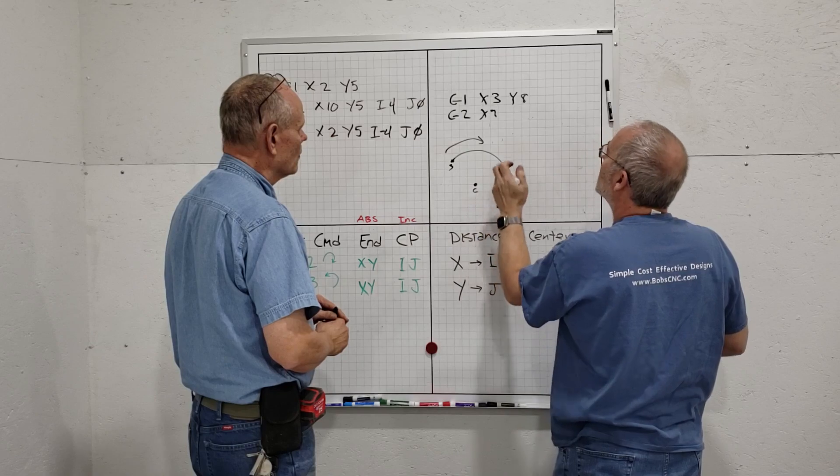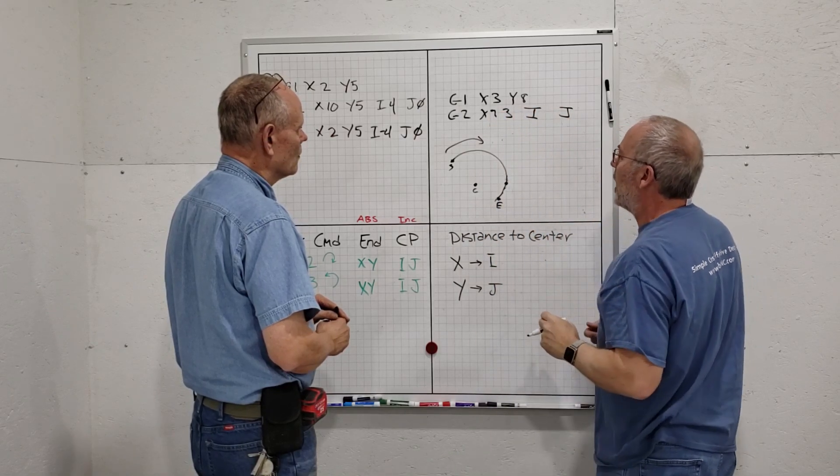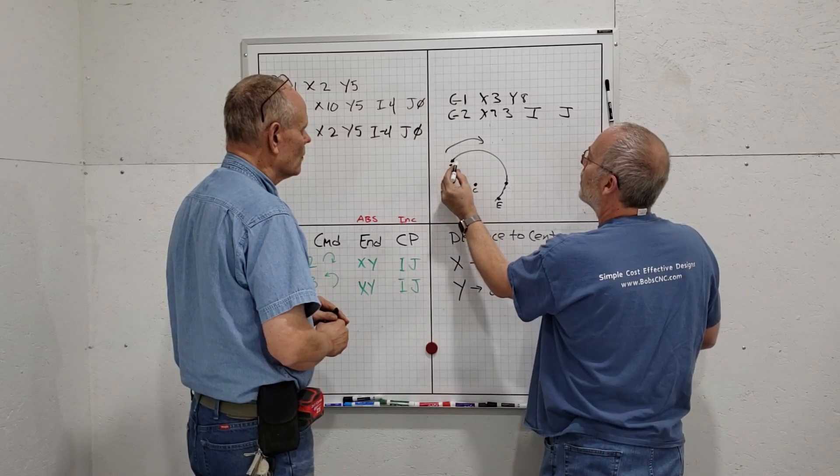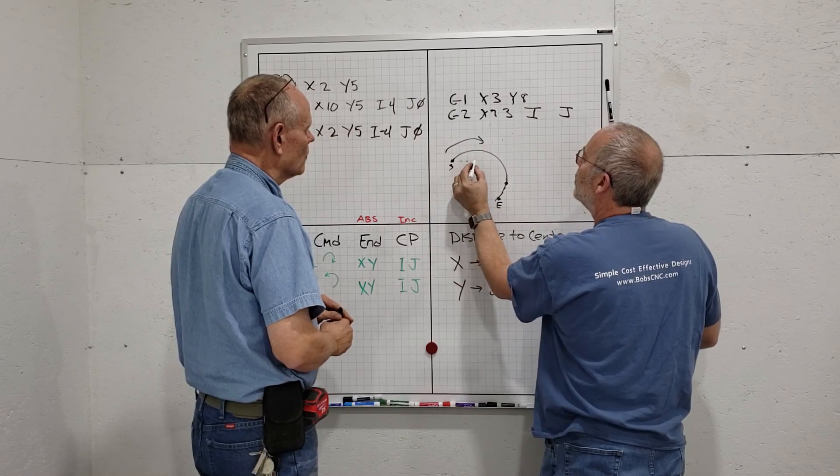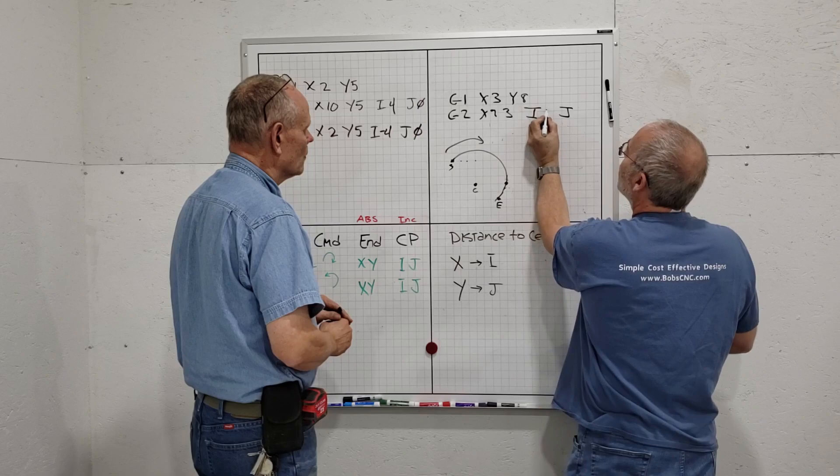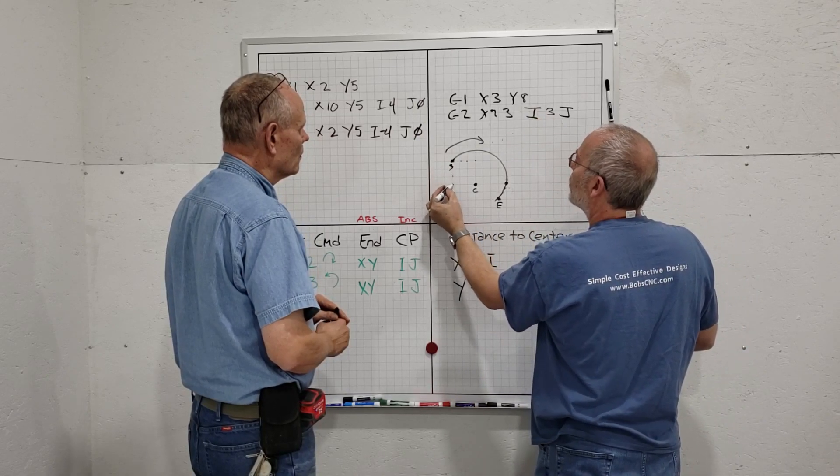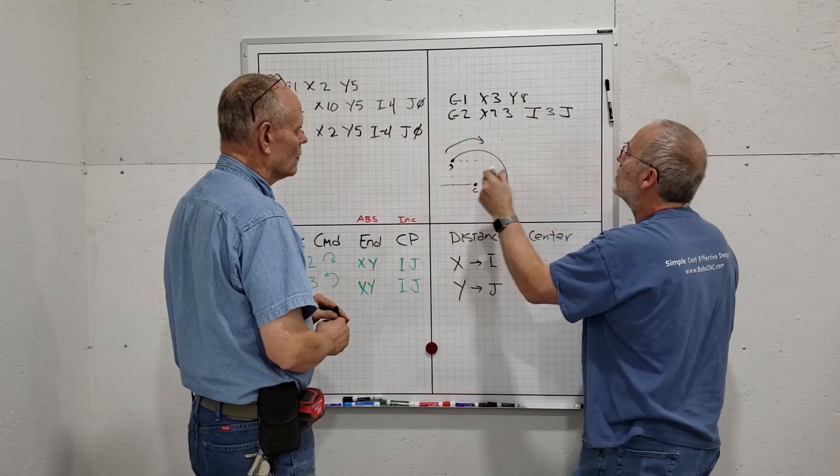Now I've got to do my dreaded I's and J's. Since I'm at my start point, I go over till I get to this line that the center point is on—one, two, three, so I'm over three. Then I'm down one, two, three to get to this line, but notice I'm down, so it's negative. You can see it doesn't really matter where your center point is; the I and J are always incremental and the sign does matter.